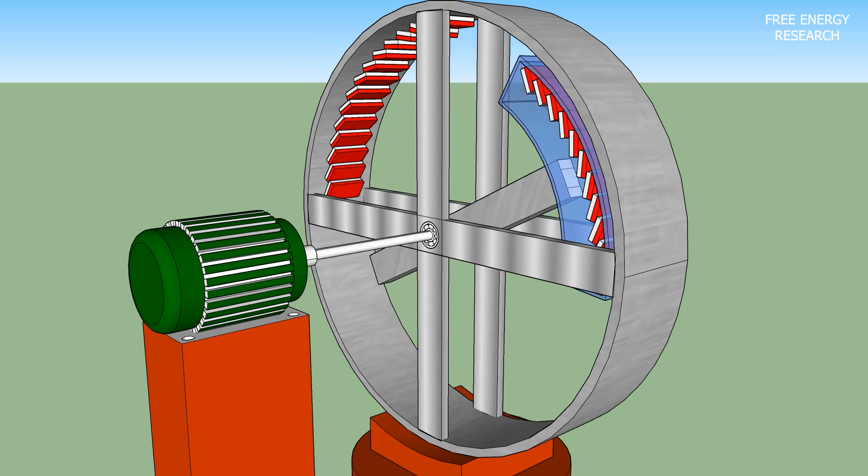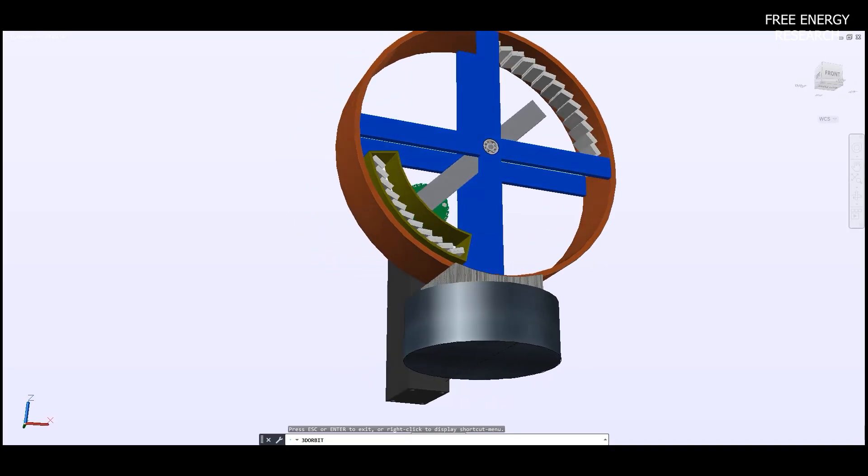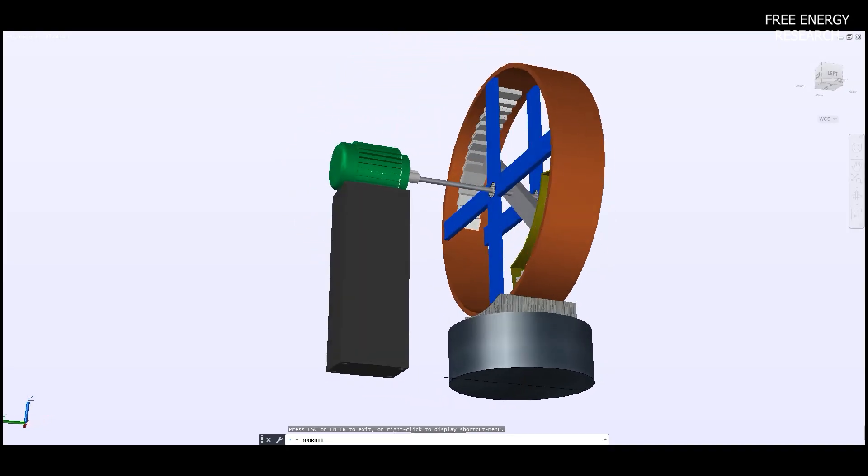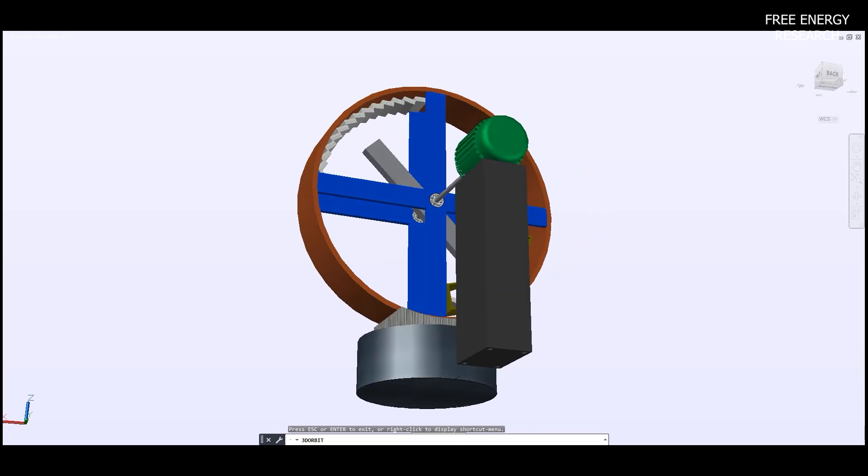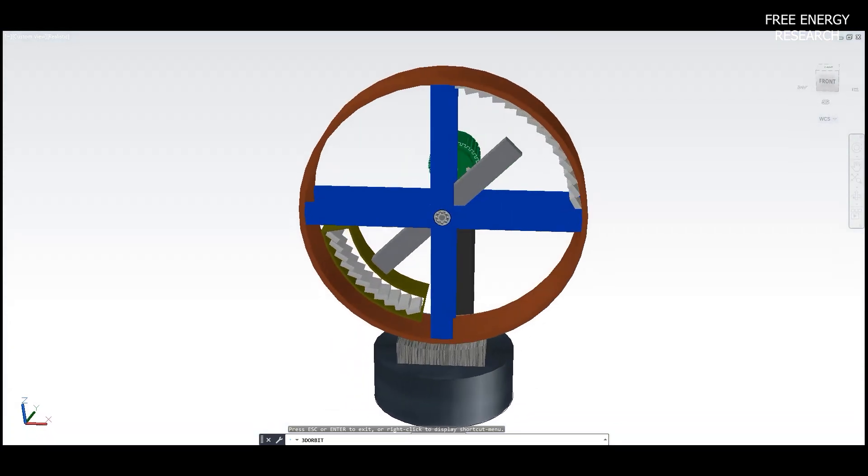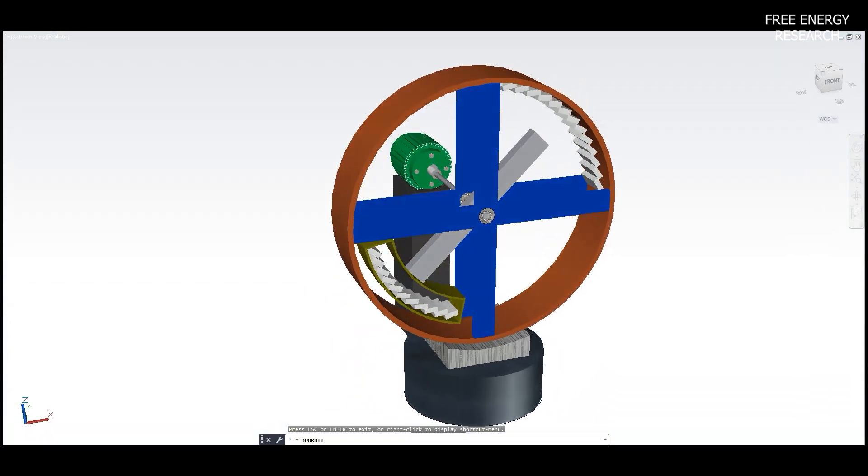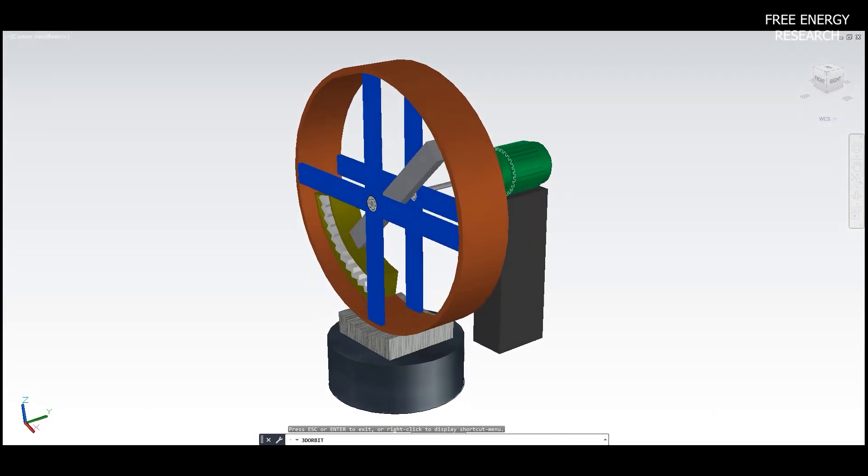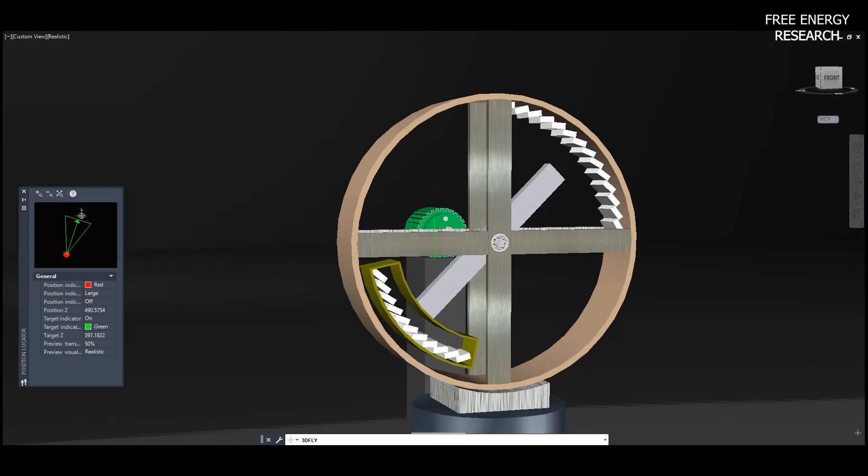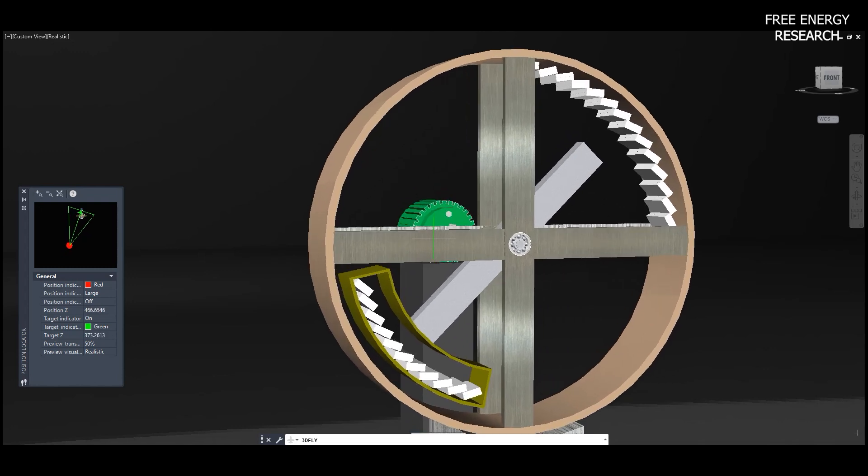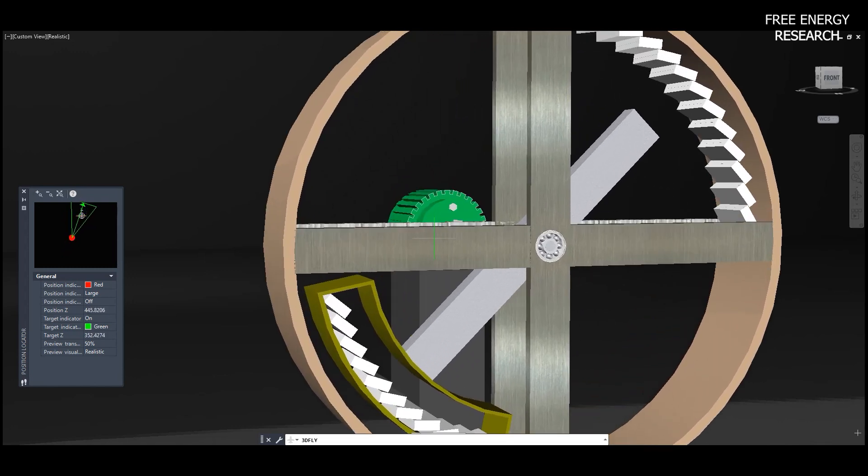Magnetic forces in action. To overcome any impediments to continuous rotation, magnetic forces step in. The strategically positioned magnets create a force, ensuring the arm seamlessly completes its rotation. This dynamic interplay of gravitational and magnetic forces ensures a constant and reliable source of energy.